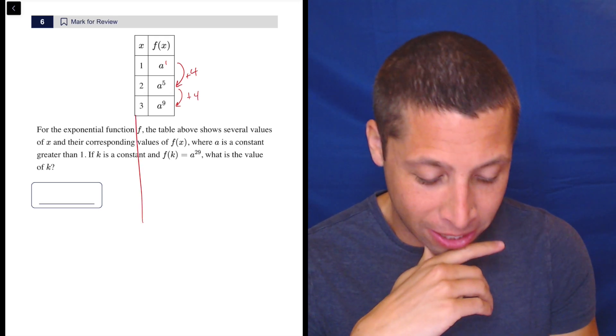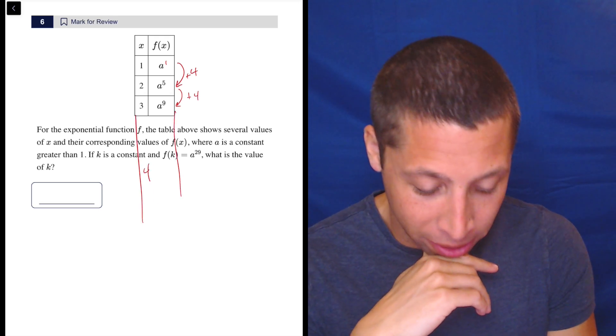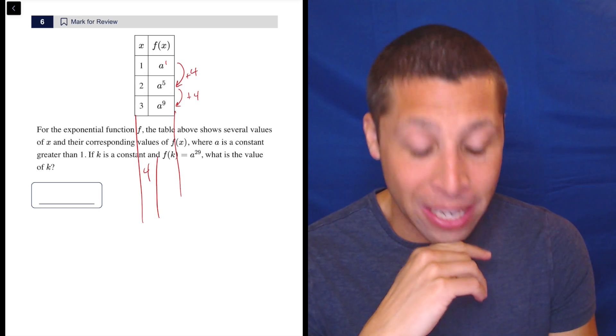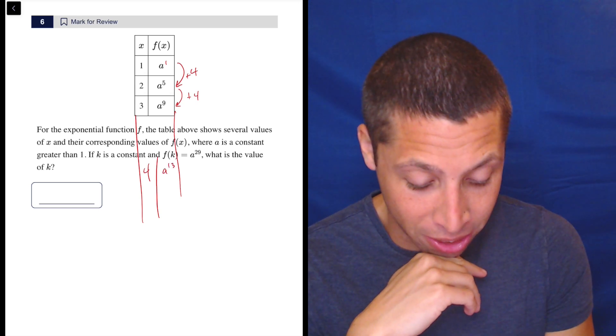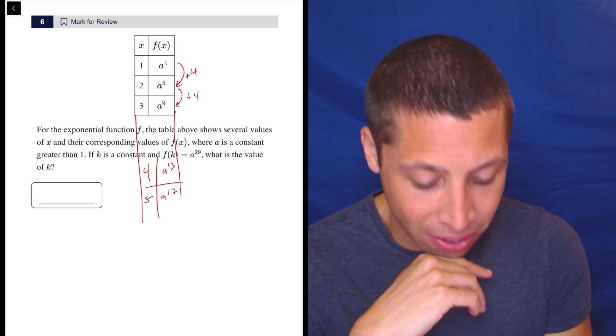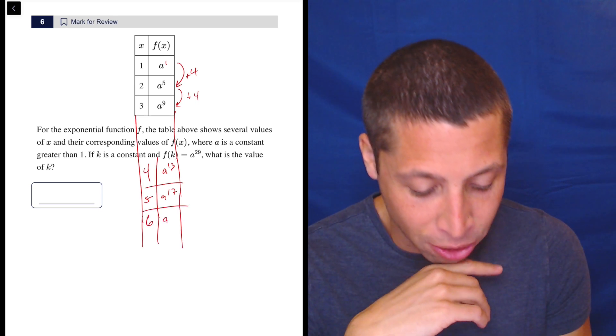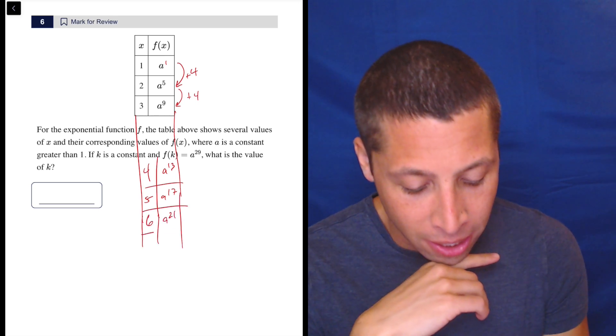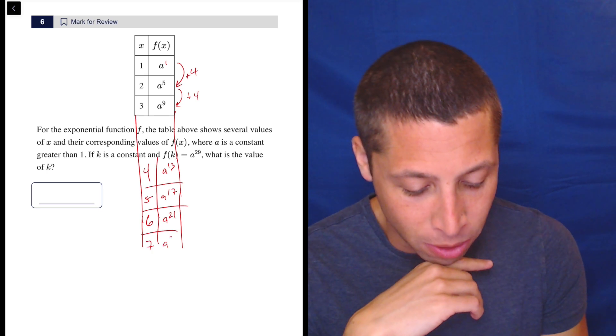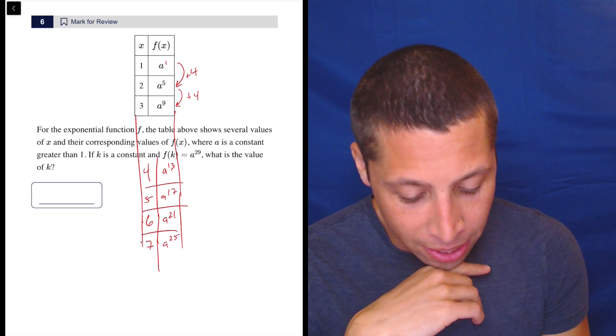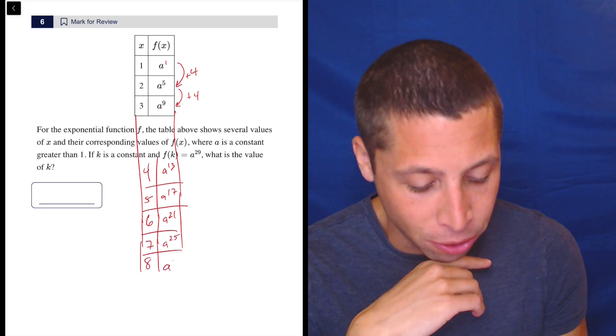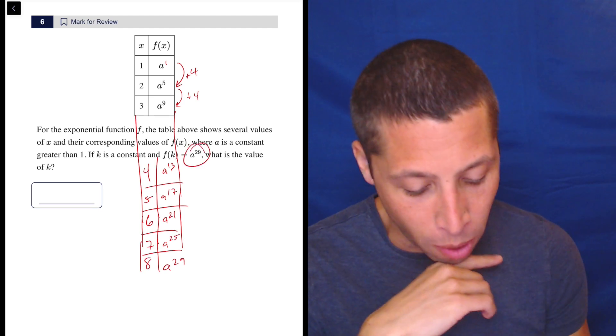So let's just continue this chart. If we had 4, that would be 9 plus 4 is the 13th. 5 is now a to the 17th plus another 4. 6 is going to be a to the 21st. 7 is going to be a to the 25th. And 8 is going to be a to the 29th, which is what we want.